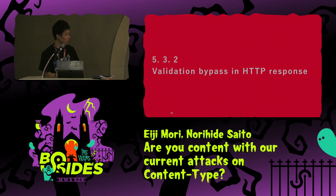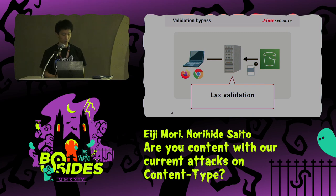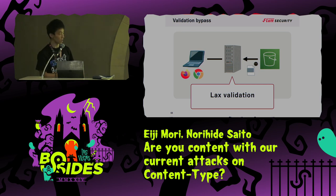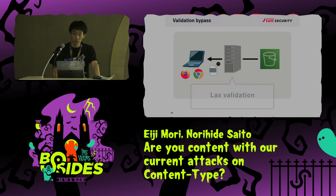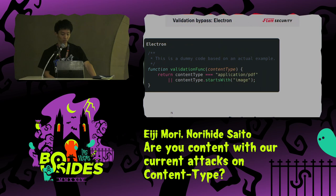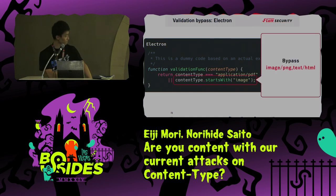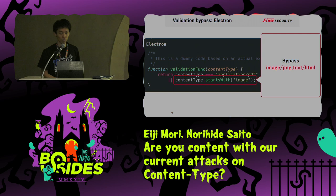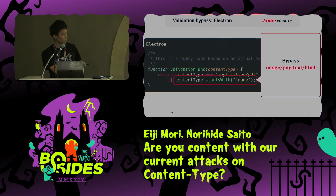Next, the validation bypass pattern in HTTP response. Even if there are validations using content type strings when a malicious file is downloaded, especially from S3, they are often easily bypassed due to lax validations. Here is an example from Electron — Electron may be XSS to RCE capable depending on the configuration. In this product, XSS was at least possible due to the lax content type validation of the HTTP response. For example, the validation checks content-type.startsWith('image'), so you can bypass with image/PNG,text/HTML.